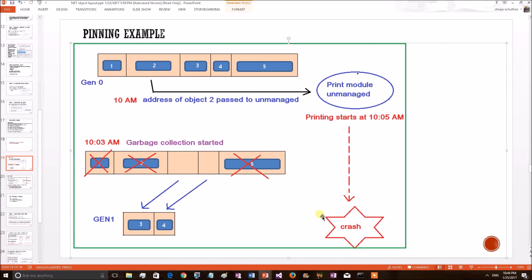So, the whole problem happened because, while doing this printing, the garbage collector came in between and collected this object. The only way not to have this crash is, garbage collector should not pick this object if the address has been moved to the unmanaged section. This is the necessity of pinning.